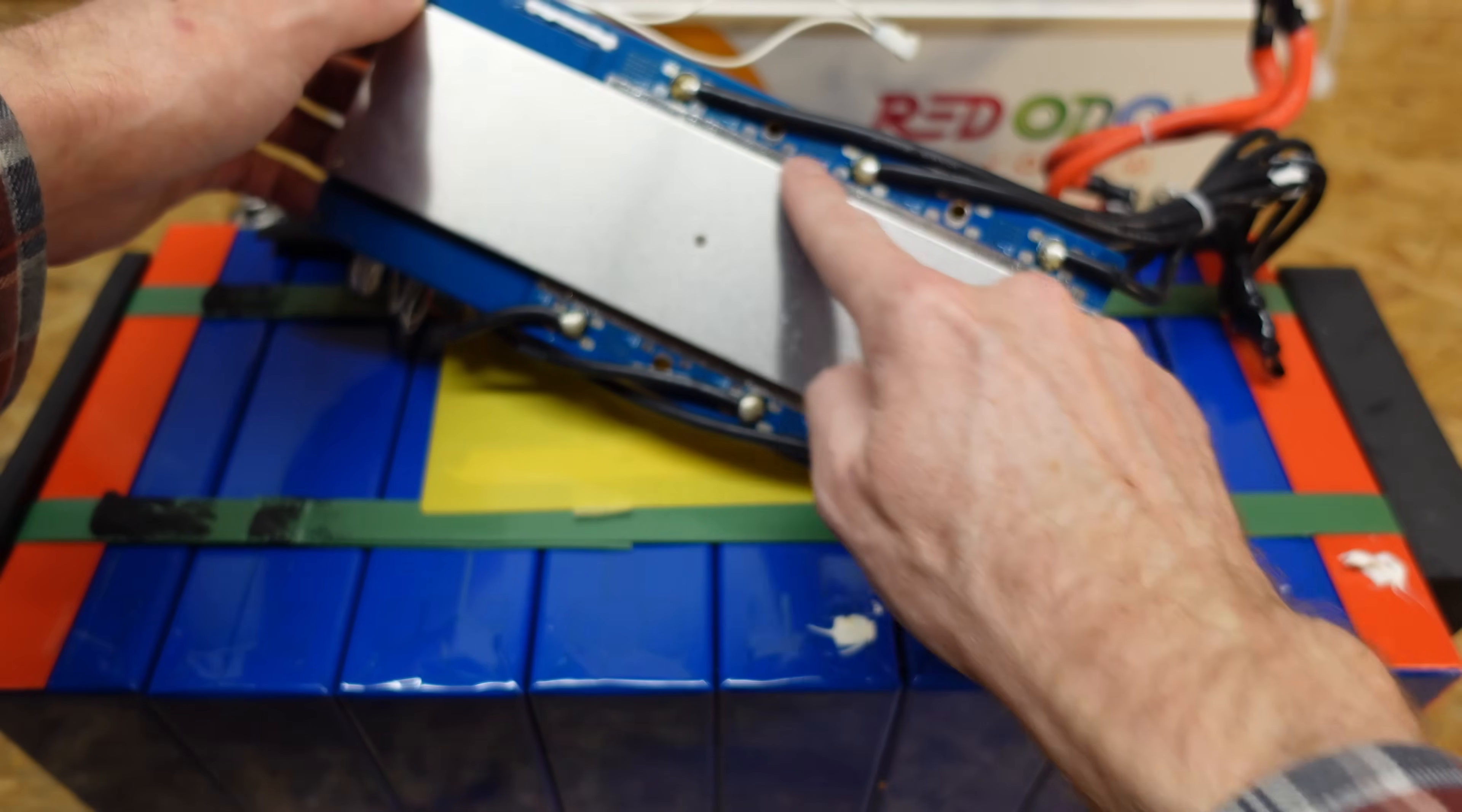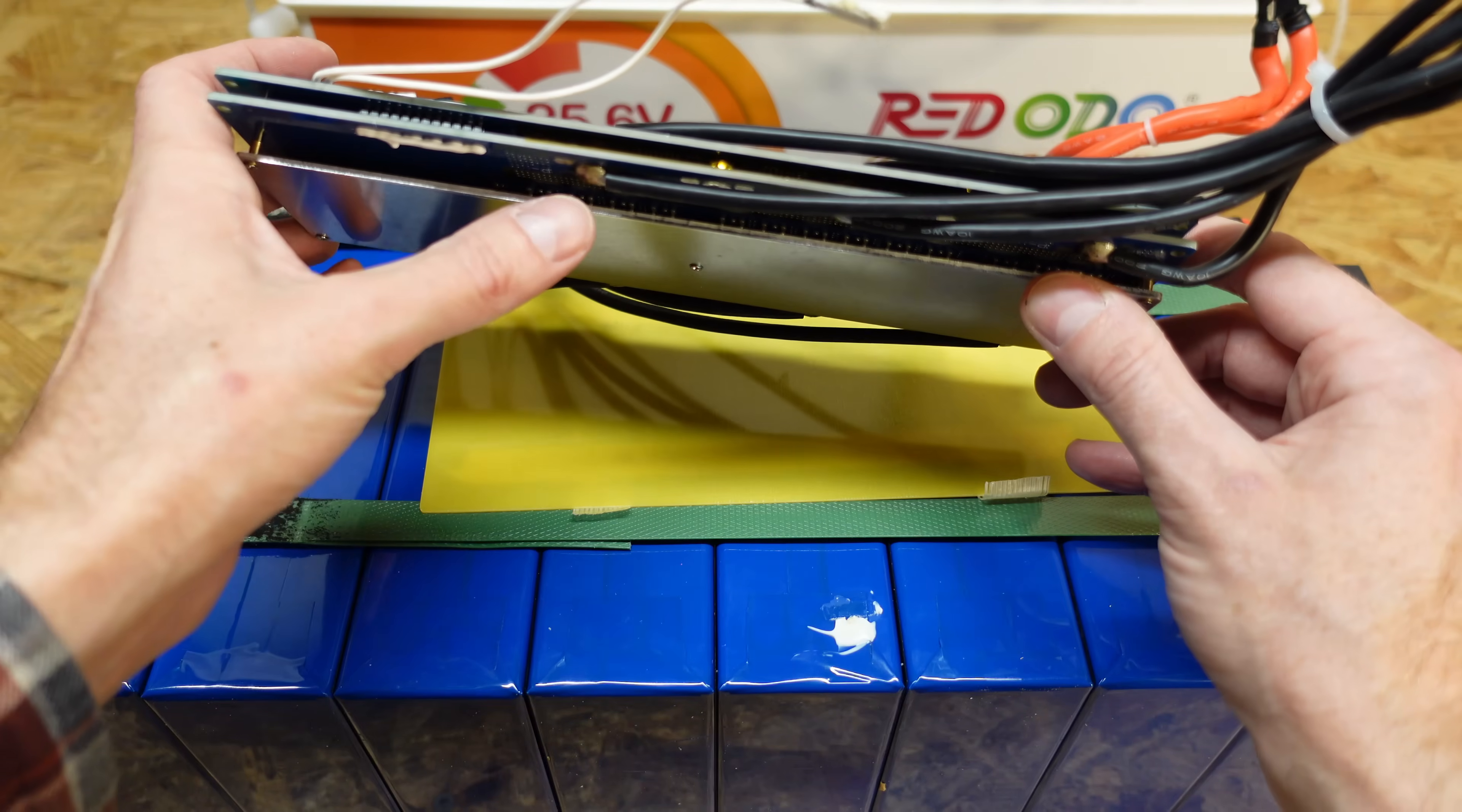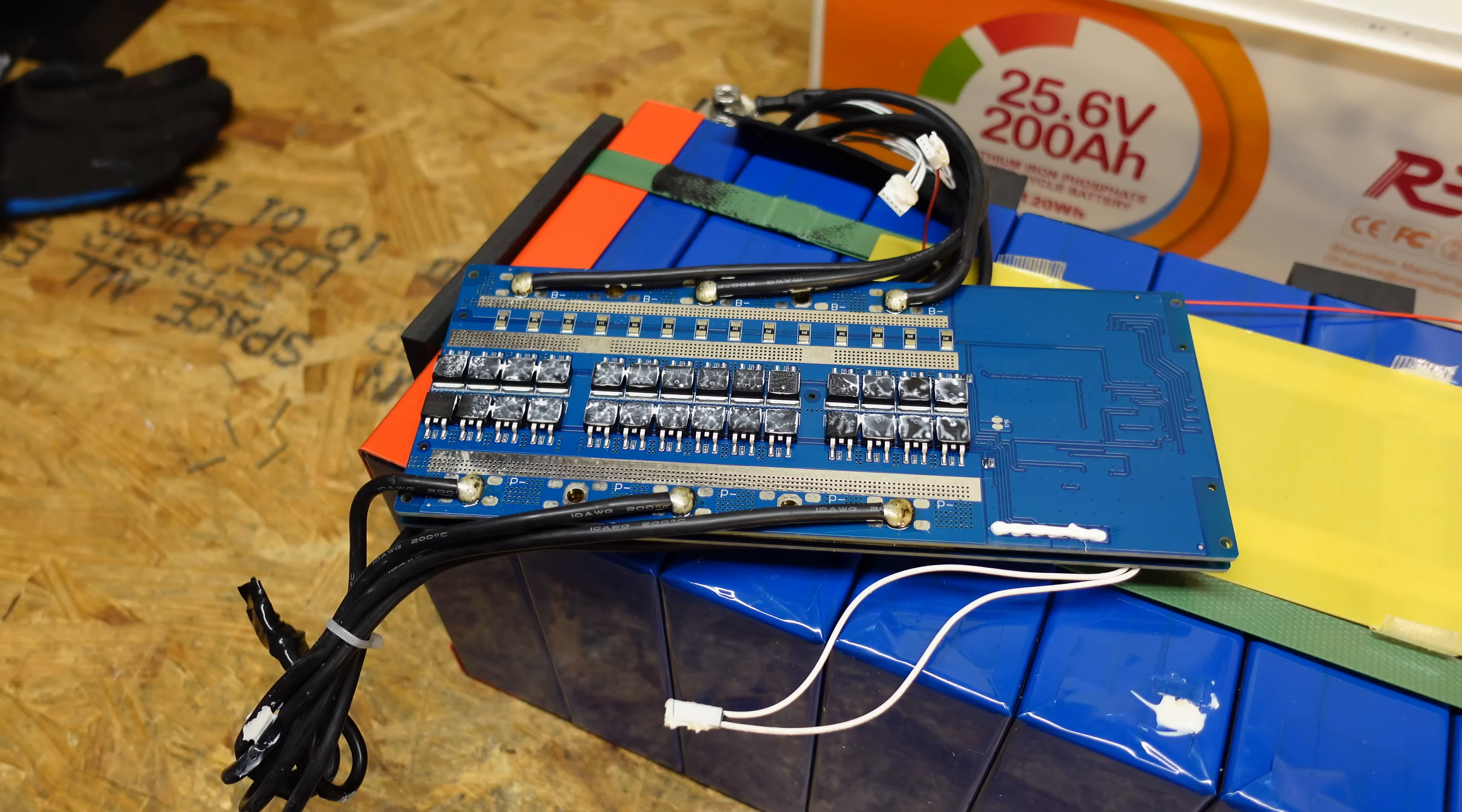On the bottom here, we can see the three additional conductors for the P- and the B-. This is a double layer PCB actually. So there are the FETs. They have some FETs on the bottom and some FETs on the top, which is interesting. This is an aluminum heat sink as we would expect here.